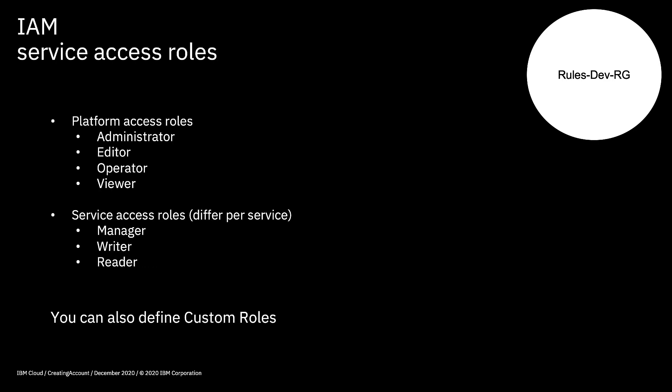At the platform level you have administrator, which allows people to actually assign access policies to other users as well as see and use all of the services within a particular resource group. You then have the editor role, which allows you to do pretty much anything except assign access policies. Right down to viewer, where you can view the service instances but can't modify them. Underneath that you also have service access roles — as a manager you can pretty much control and change the service, but as a reader you can only see that the service is there. You can also define custom roles, creating a role that gives you a combination of different access privileges to particular services.